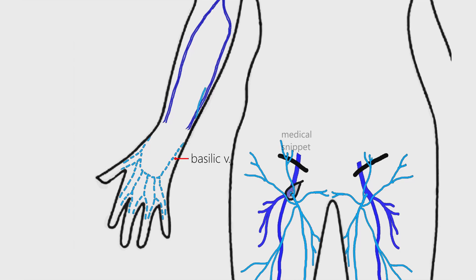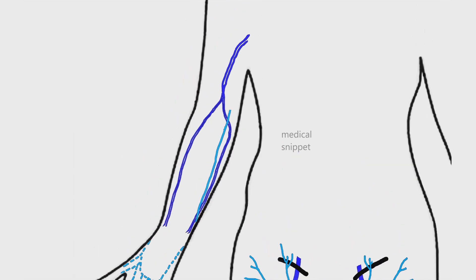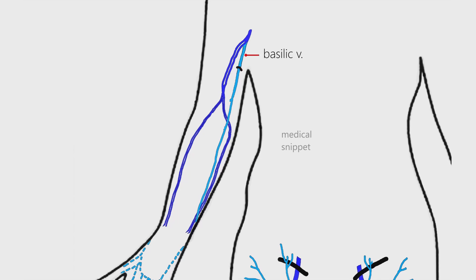The basilic vein ascends along the medial aspect of the forearm. In the middle of the arm, the basilic vein pierces the deep fascia. At the lower border of the teres major muscle, the basilic vein joins with the brachial vein to form the axillary vein.